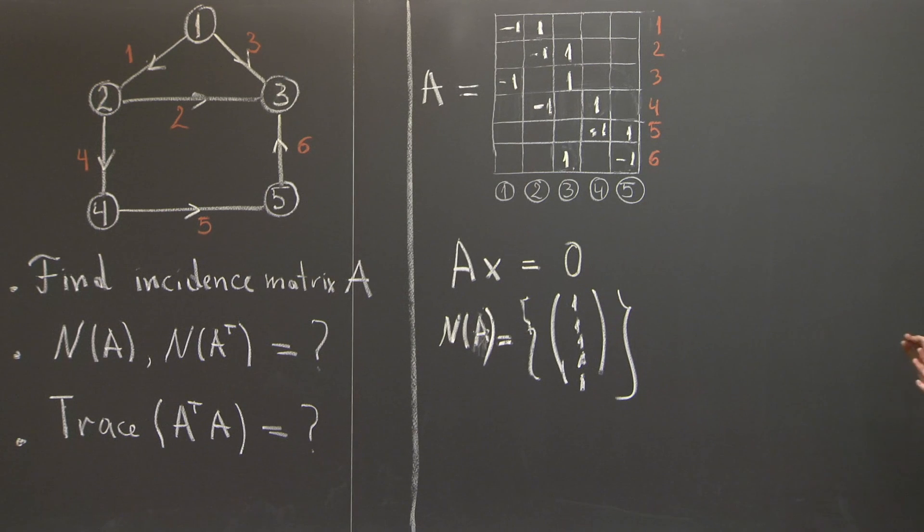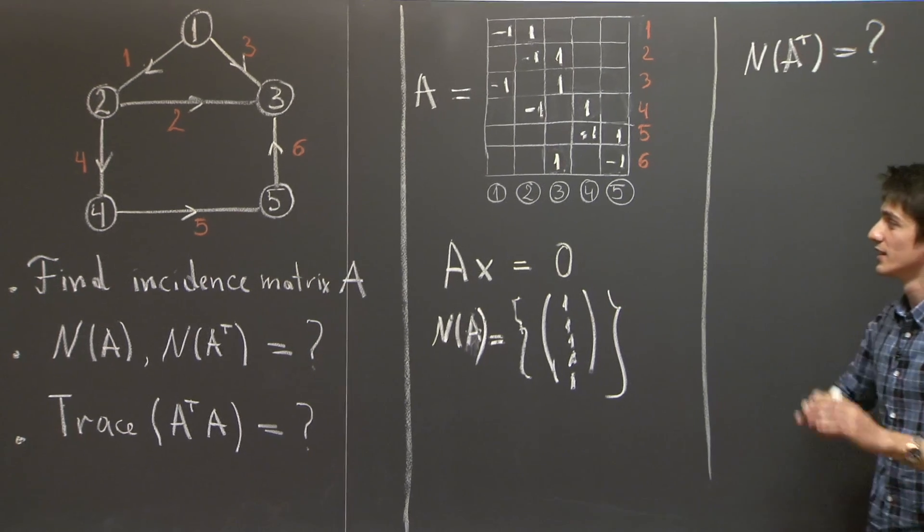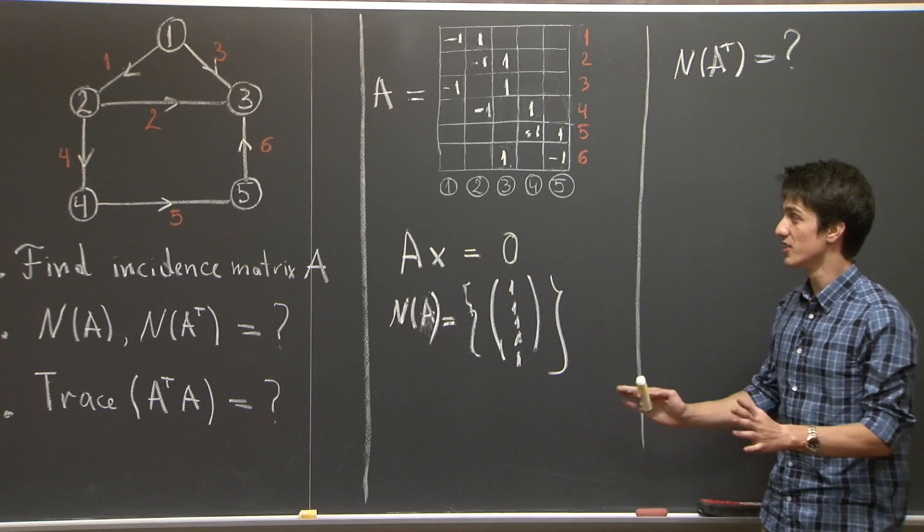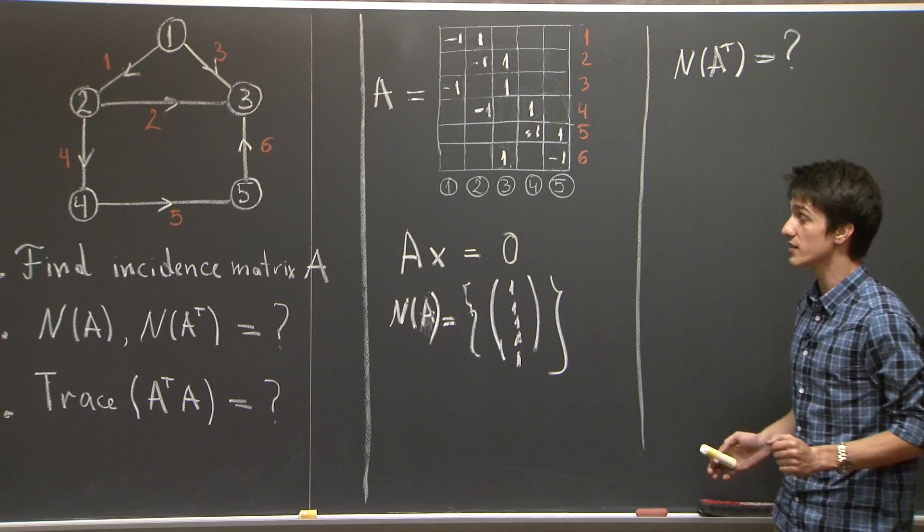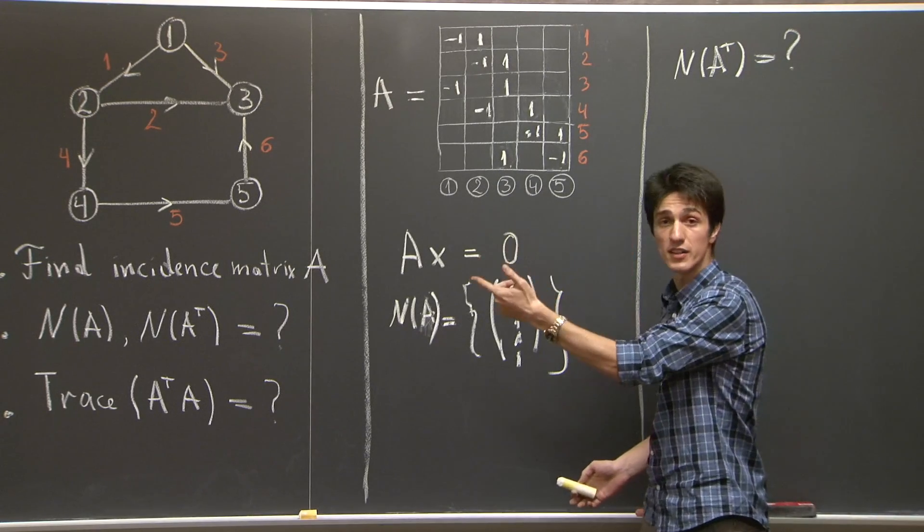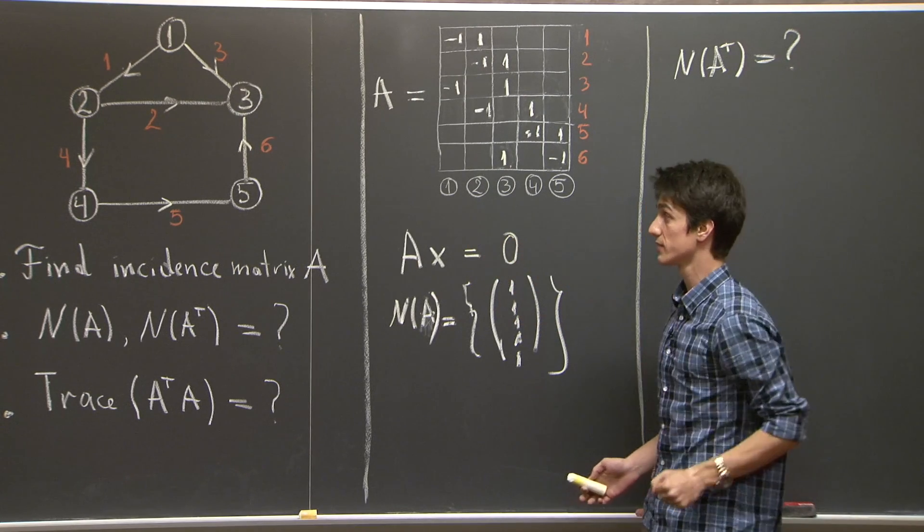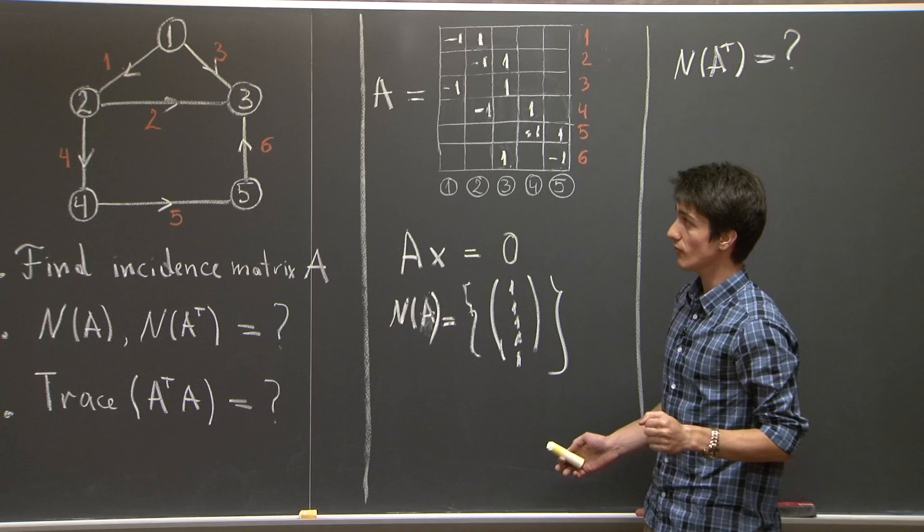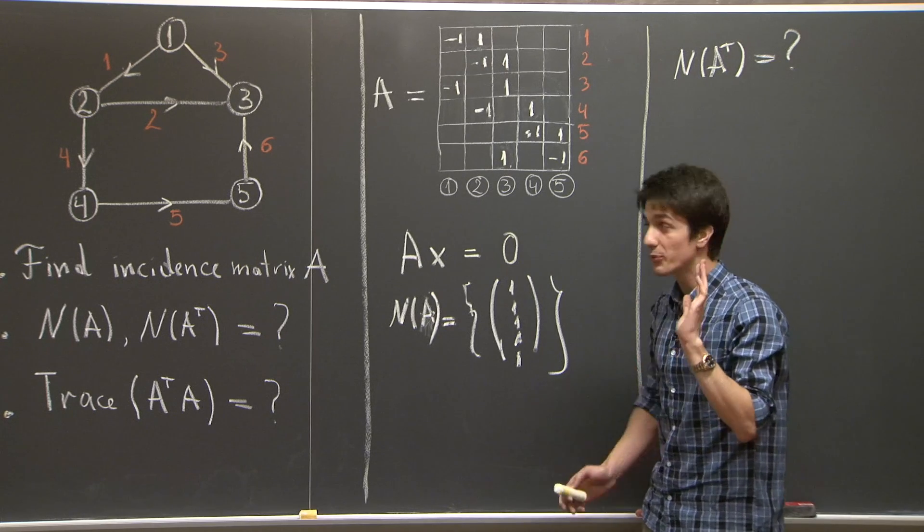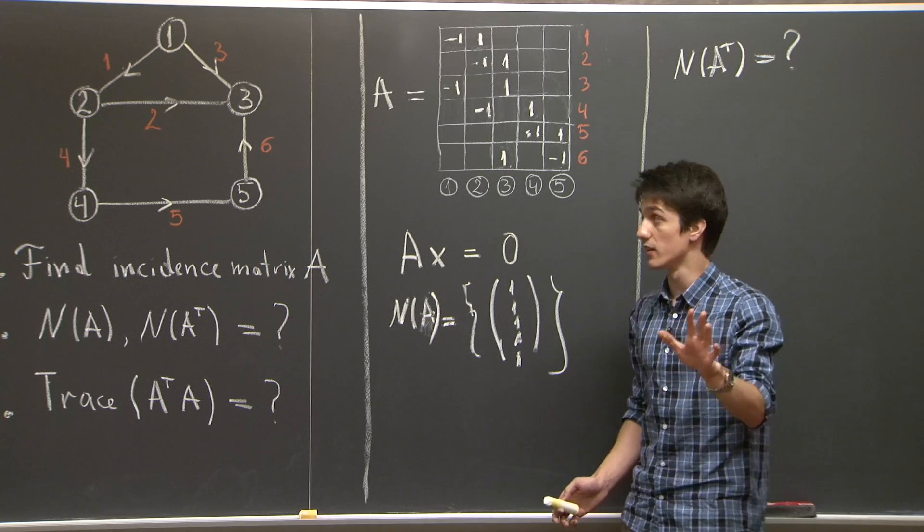Now, what about the null space of A transpose? Adopt this analogy with electric circuits, but this time we're going to look at currents flowing across the edges of the graph. So,